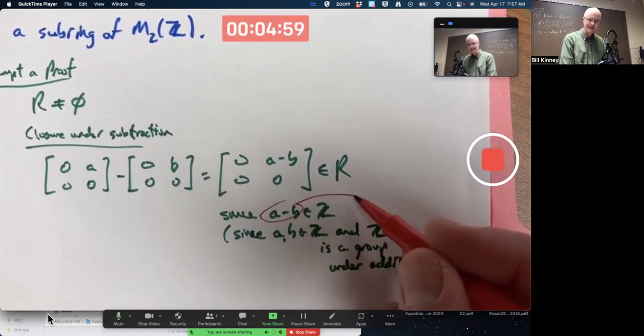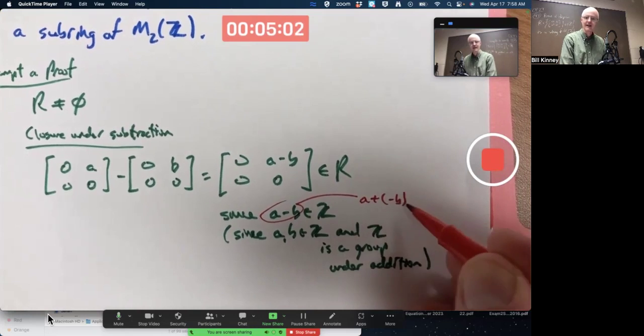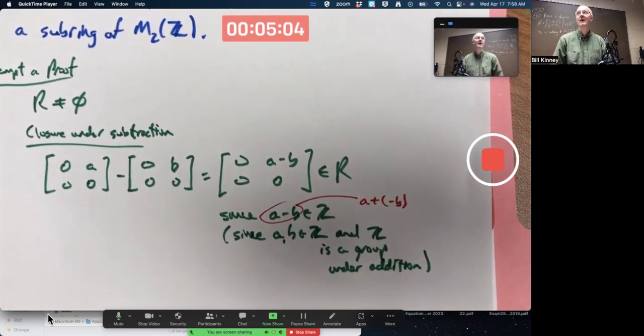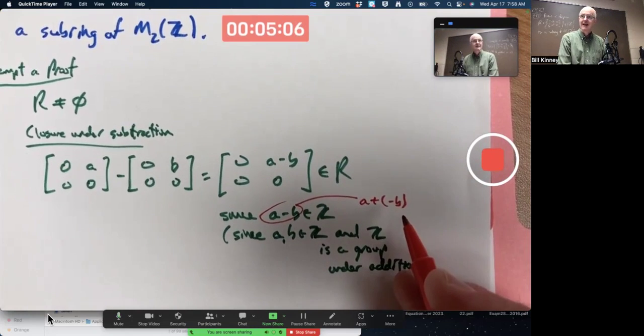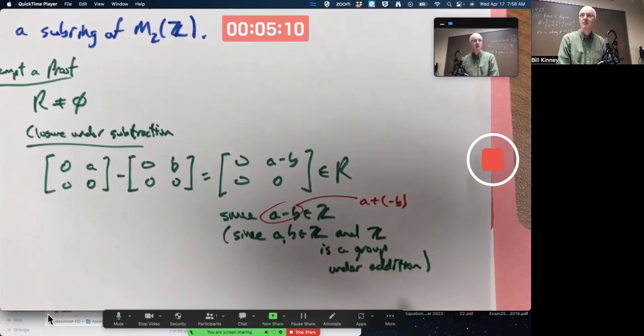A minus B is the same as A plus the additive inverse of B, negative B, where that represents the inverse of B in Z as a group under addition.